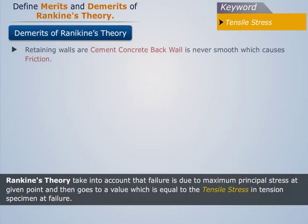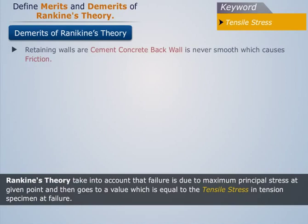Demerits of Rankine's Theory: Retaining walls are cement concrete back wall which is never smooth, causing friction.